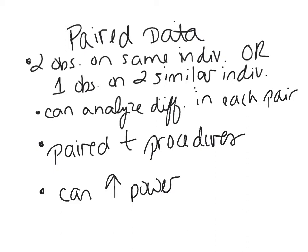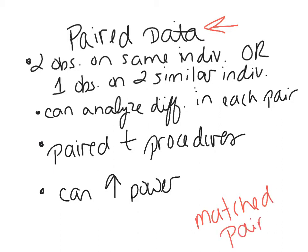Let's wrap this chapter up with a few reminders and conceptual things. The first thing we want to talk about is what's called paired data. If you remember from before, we talked about matched pairs — a matched pairs experiment. This is the same thing; in a study it's called paired data, but in an experiment it would be called matched pairs. I'm taking either two observations on the exact same individual, or one observation on two very similar individuals.